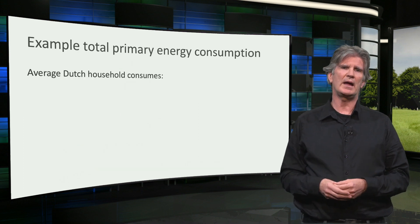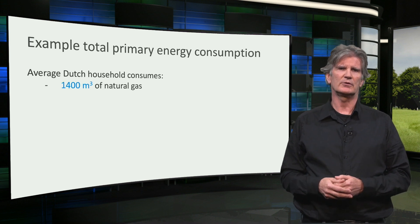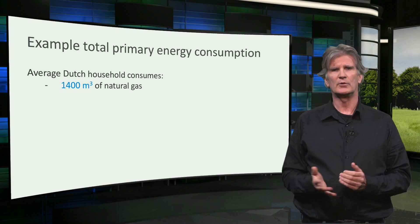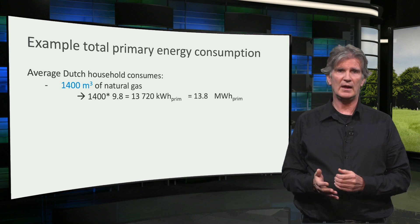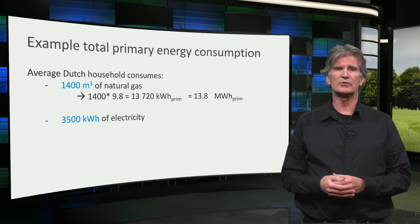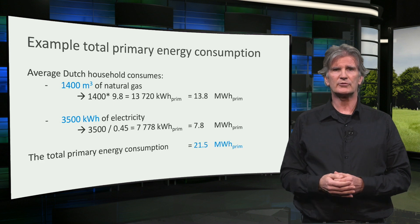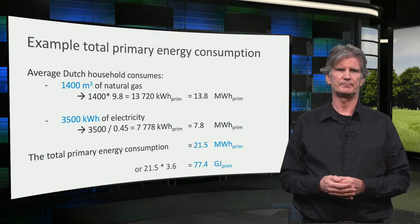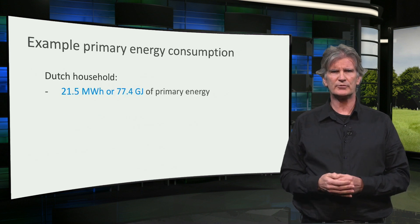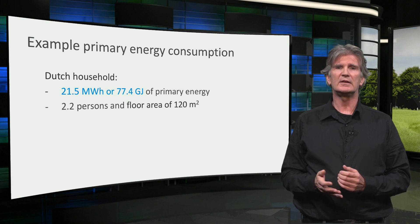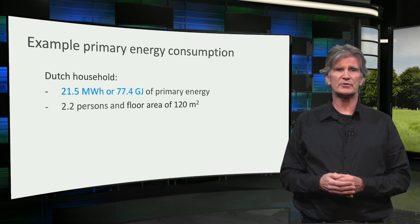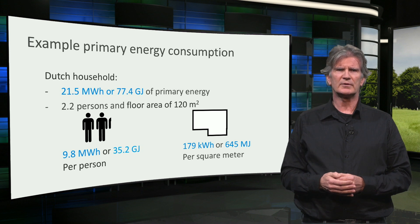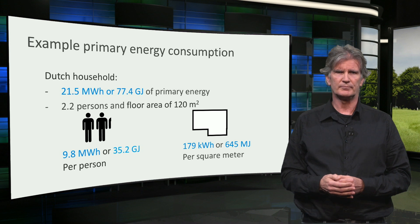This is an example to calculate the total primary energy consumption per year. Again, we take the average Dutch household. It consumes 1,400 cubic meters of natural gas, which equals 13.2 megawatt hours of primary energy, and 3,500 kilowatt hours of electricity, which equals 7.8 megawatt hours of primary energy. This converts to a total of 21.5 megawatt hours or 77.4 gigajoules of primary energy. The next step is to calculate the primary energy used per person and per square meter floor area. Based on an average of 2.2 persons per household and a floor area of 120 square meters, the average energy consumption is 9.8 megawatt hours or 35 gigajoules per person, and 179 kilowatt hours or 645 megajoules per square meter.